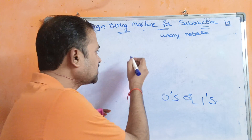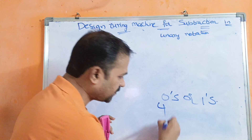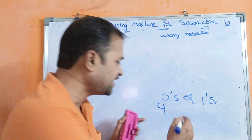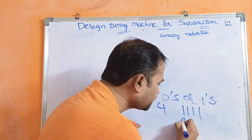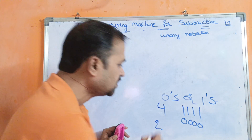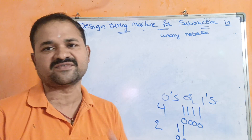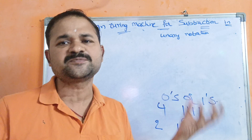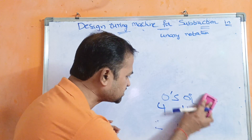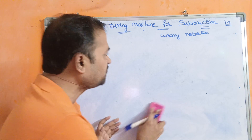Assume we have two numbers. The number four is represented by four ones or four zeros, and two is represented by two ones or two zeros. For convenience, let us use ones instead of zeros — we can use zeros also, there is no problem.